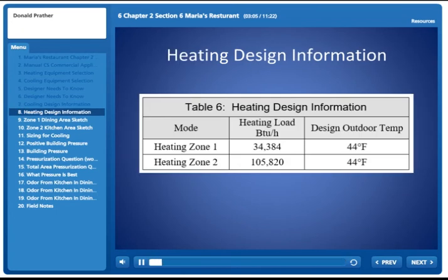For our heating design, we don't worry about latent and sensible. It's just straight sensible, and heating Zone 1 is 34,384 for an outdoor design temperature of 44. We have the same outdoor design temperature for the kitchen, and that's 105,820 BTUs.